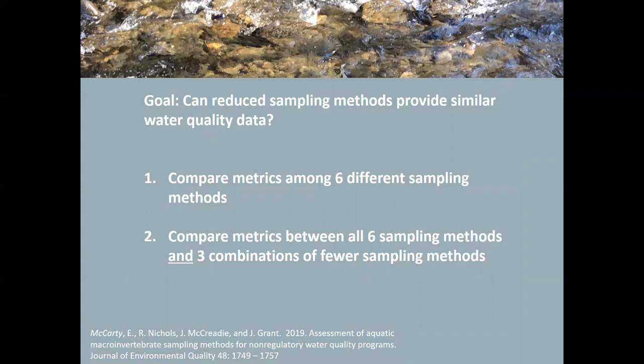So can reduced sampling methods provide similar water quality data compared to doing all of those methods, that full bioassessment? That is this question we answer in two steps. First, take each sampling method individually, the six that I just showed in the previous slide, and compare different metrics among those six different sampling methods to identify which ones should stay and which one should maybe go. And then second step would be to take the metrics that we want to keep and do different combinations of the metrics, the different combinations of the sampling methods. So we chose three combinations. Those combinations have fewer sampling methods and compared those to doing the full bioassessment with six methods to see if we're able to get similar water quality data, but use less effort, less sampling, and hopefully that would transfer to less expense.